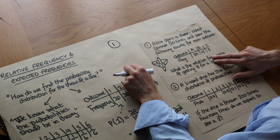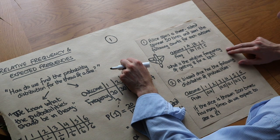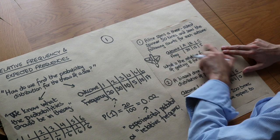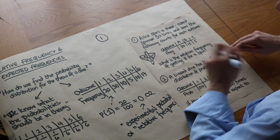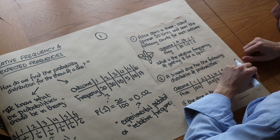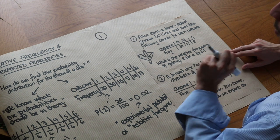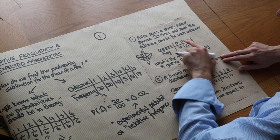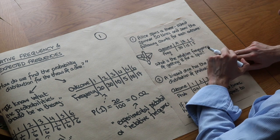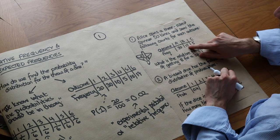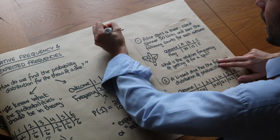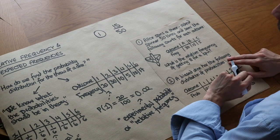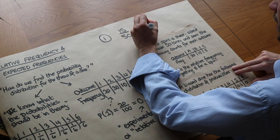Alice spins a three-sided spinner 50 times and sees the following counts: outcome A appeared 30 times, outcome B appeared 15 times, outcome C appeared 5 times. What is the relative frequency or experimental probability for getting B? The relative frequency is just the proportion of time we saw that outcome, used as an estimate for the probability. The total number of spins was 50 and we saw B 15 times, so it's simply 15 out of 50. As a decimal, that would be 0.3.